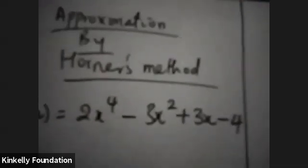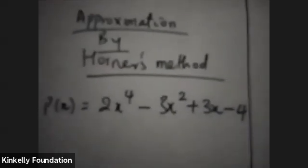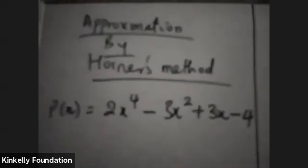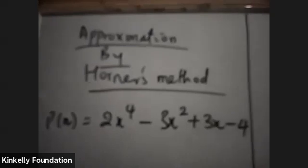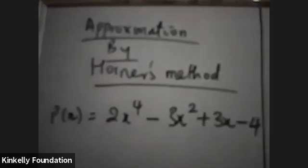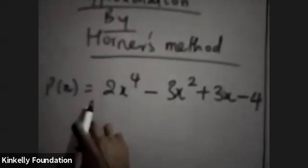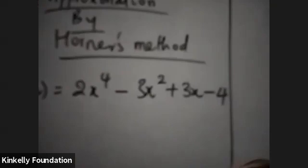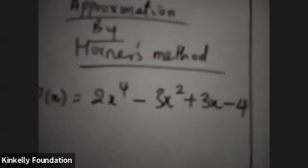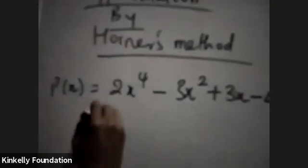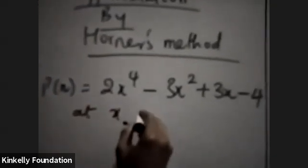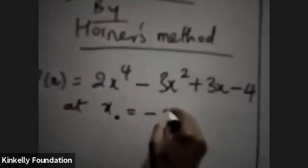Good evening. So sorry that I have not made a video since. I just remembered this from your test. Now, please, to approximate using Horner's method, assuming that you have a polynomial p(x) equal to 2s to the power of 4 minus 3s squared plus 3s minus 4. And you are asked to approximate this at s naught, that is the initial approximation equal to minus 2.